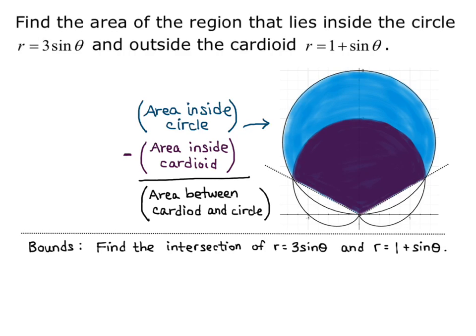For the bounds, we want to find the intersection of r equals 3 sine theta and r equals 1 plus sine theta. We set the two equations equal: 3 sine theta equals 1 plus sine theta. Subtracting sine theta from both sides gives 2 sine theta equals 1. Dividing both sides by 2, we have sine theta equals one half.